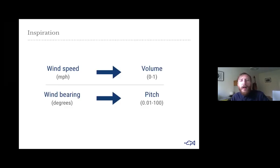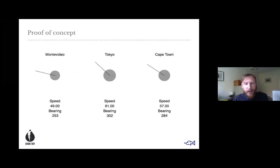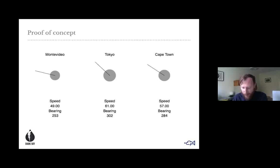I thought, why don't I create a simple proof of concept that does something similar but with different outcomes? Wind speed mapped to volume, and wind bearing mapped to pitch. I came up with what I called at the time the Musical Weather Vane. I picked three places in the world — Montevideo, Tokyo, and Cape Town — got live weather data from the Dark Sky service, and mapped the speed and bearing to three different notes, one for each place.